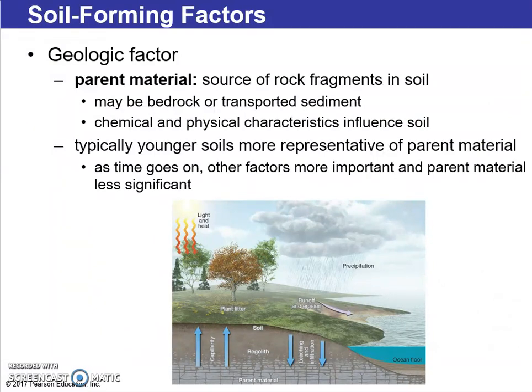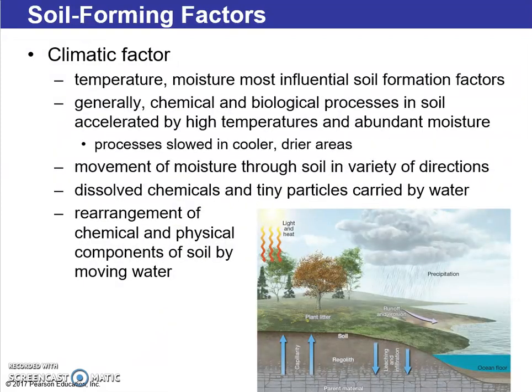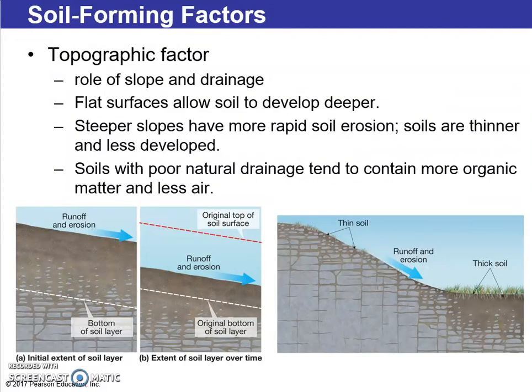Each soil forming factor plays a role. The geologic factor refers to parent material — the source of rock fragments in the soil, including bedrock and its chemical and physical characteristics. The climatic factor involves temperature and moisture, which are the most influential factors in soil formation. Chemical and biological processes are accelerated by high temperatures and abundant moisture, and the converse is also true.